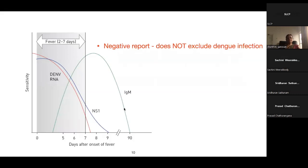The NS1 antigen sensitivity is very high during the first few days of illness, then comes down. It is a surrogate marker for virus in the blood. A negative report does not exclude dengue infection, but if positive, it is highly specific for dengue infection — not specifically DHF. For primary infection, NS1 can be positive for a longer period; in secondary infection, it is positive only for a short period.